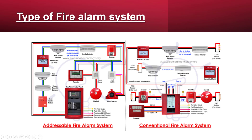An addressable fire alarm system gives a unique address to each device on the system. This allows you to identify the precise location of the activated device and relay that information to the fire department. In this system, all devices are connected to a wire that is looped into the control panel. As a result, even if one section is damaged, the system is still able to relay information to the control panel utilizing the other end of the loop. Addressable fire alarm systems provide a lot of flexibility and are often used for large facilities.